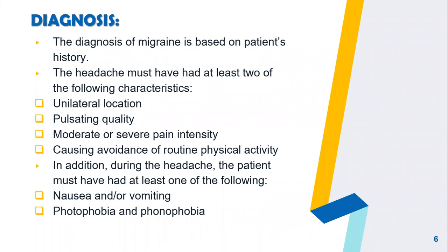If a patient is suffering from migraine with aura, the diagnosis is based on the patient's history. According to diagnostic criteria established by the International Headache Society, patients must have had at least five headache attacks lasting four to 72 hours, with at least two of the following: unilateral location, pulsating quality, moderate or severe pain intensity, or causing avoidance of routine physical activity. During the headache phase, the patient must have had at least one of: nausea and/or vomiting, photophobia, or phonophobia.